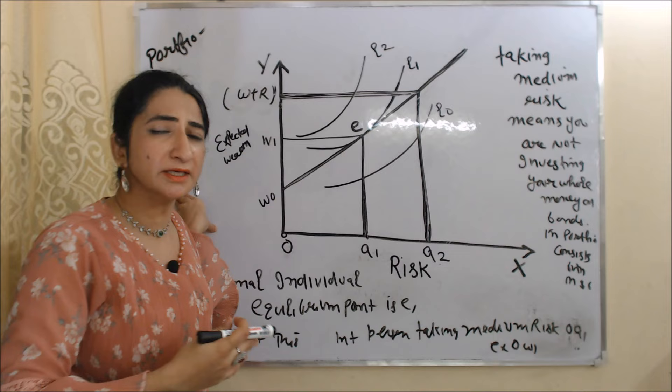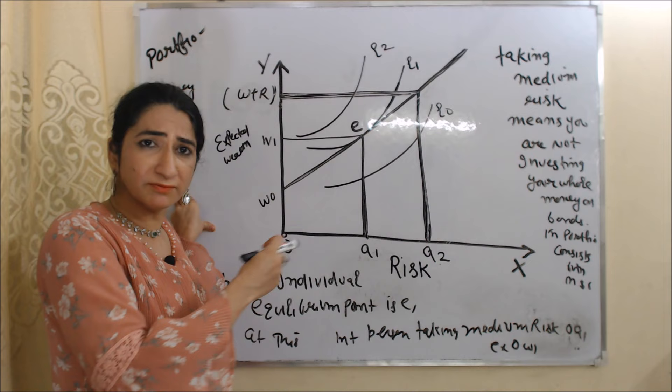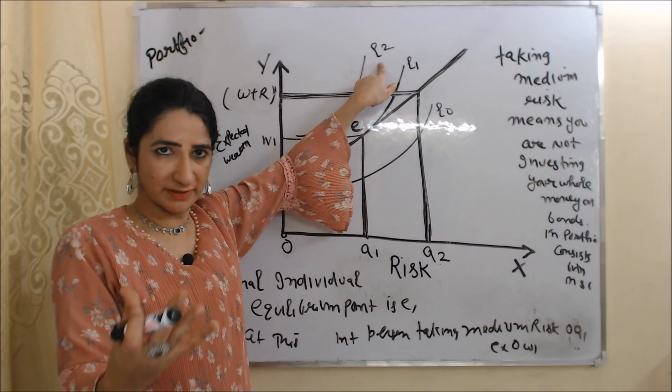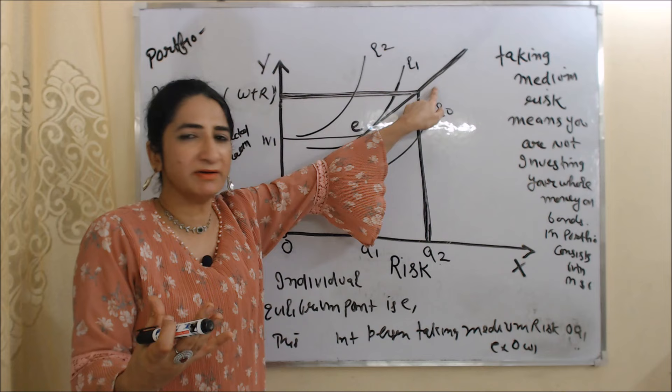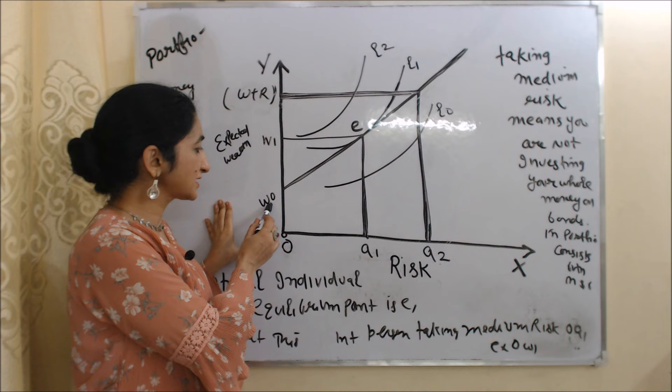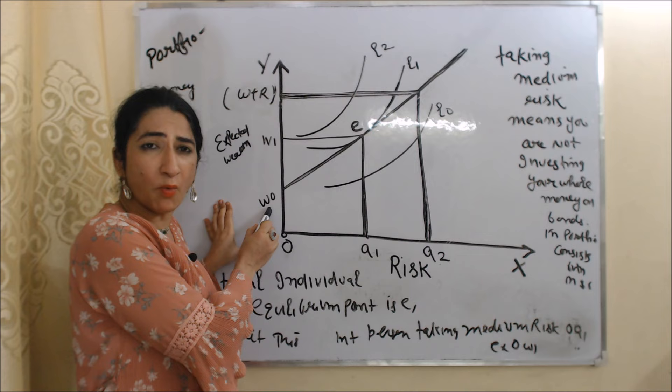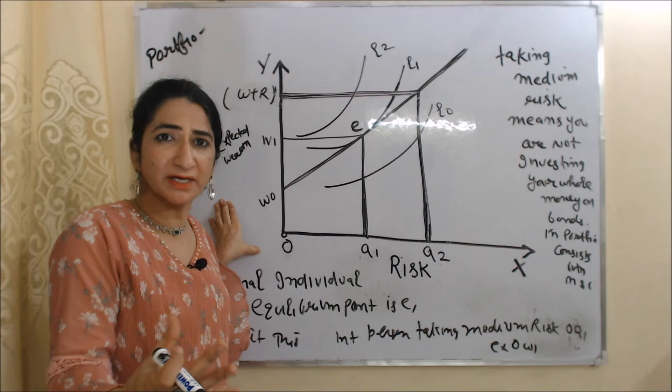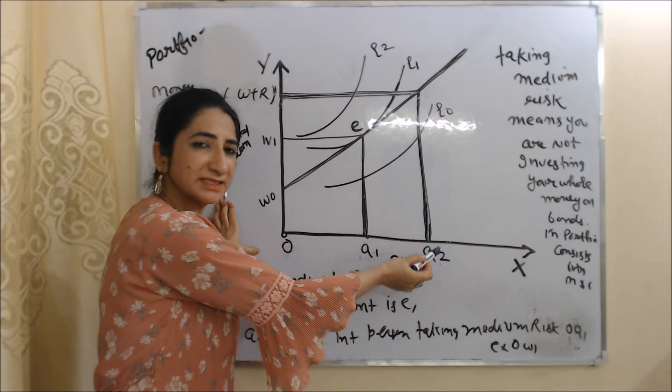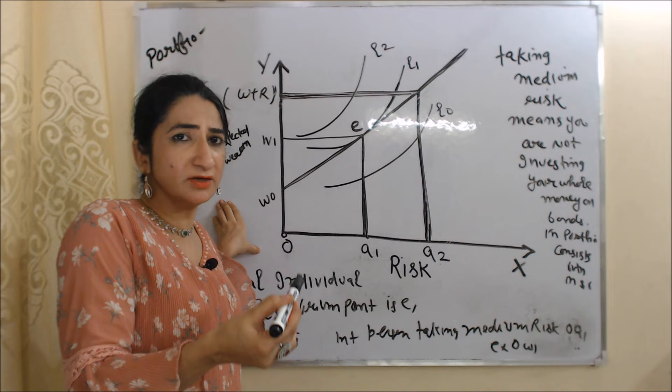Obviously, if you are taking more risk by investing your money in bonds and stocks, your expected wealth will also increase. The curves L0, L1, L2 are indifference curves showing the utility of a person, and there is also a budget line. At zero risk, your expected wealth is very low — you only have W0 wealth, meaning you are not investing your money anywhere and have no interest income. O-A2 is maximum risk, meaning you are investing your whole money in bonds, and at maximum risk your wealth is also maximum: W plus R, where W is actual wealth and R is interest income.